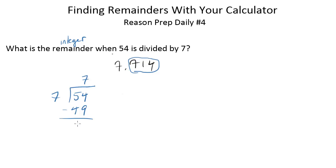We put 49 down here because 7 times 7 is 49 and we subtract these and we get 5 and notice since 7 can't go into 5 equally our remainder is 5, right? That's the long division way.